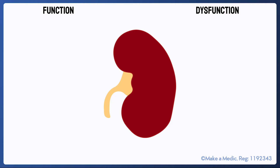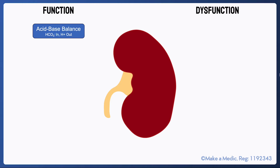Before we talk about renal replacement, we should consider the normal functions of the kidneys and the corresponding consequences of these functions being lost. Firstly, the kidneys are important in maintaining a stable blood pH. They are able to excrete acids in the urine, recycle most of the bicarbonate that enters a filtrate, and generate more bicarbonate when required. A loss of this function results in acidosis.